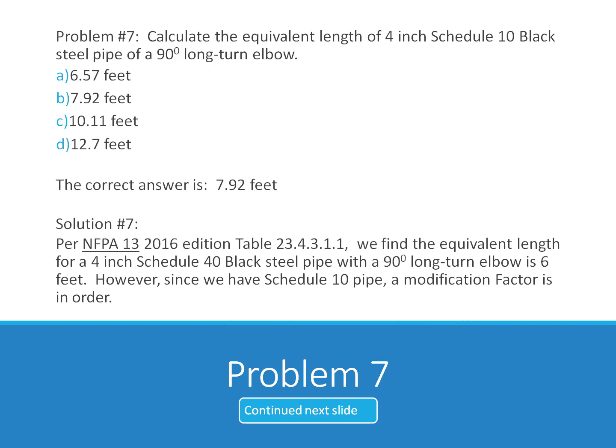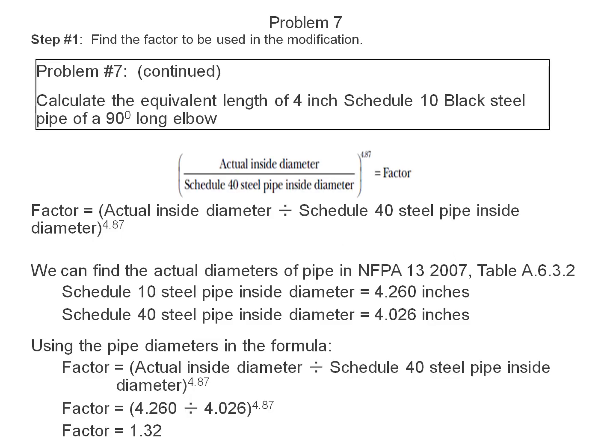The solution, per NFPA 13, 2016 edition, Table 23.4.3.1.1. We find the equivalent length for a 4 inch Schedule 40 black steel pipe with a 90 degree long turn elbow is 6 feet. However, since we have Schedule 10 pipe, a modification factor is in order.